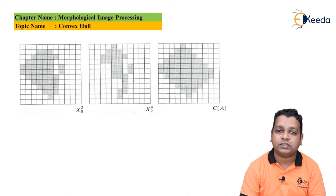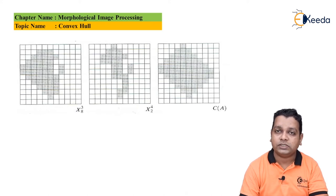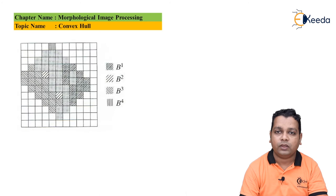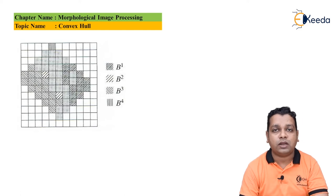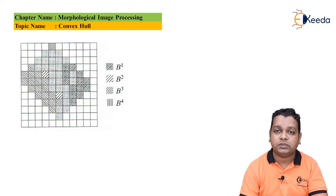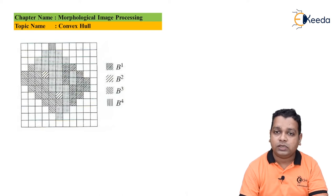Here we have the corresponding figures representing X_8^3 and X_2^4, and the convex hull represented by C(A) you can observe here. The convex hull is shown with the effect of the four structuring elements with different shadings. On the right-hand side you can see the differentiation of shading for B^1, B^2, B^3, and B^4 structuring elements. A few tilted lines and few vertical lines can be seen in the convex hull.